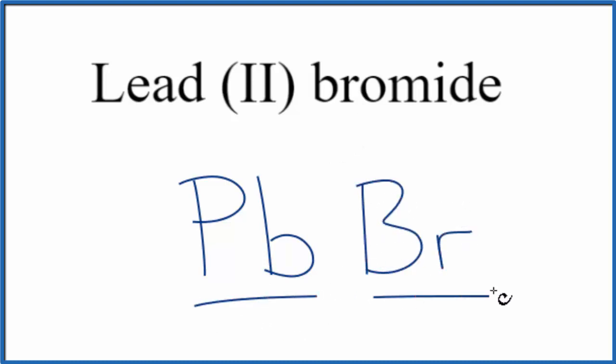So we have a metal and a non-metal. We're going to name this as an ionic compound. For the lead, it's a transition metal, and this Roman numeral 2 right here tells us the charge on the lead. So we have 2 plus as our ionic charge for the lead.